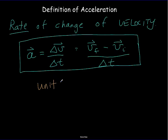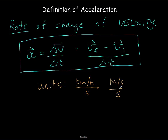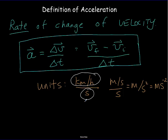The units for acceleration are always speed units per unit time. For instance, we've seen kilometers per hour as the speed units divided by seconds. You might also see meters per second every second, which can be written as meters per second squared, or in IB notation, meters times seconds to the minus two. Take care to note that it's always speed units per time unit.